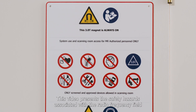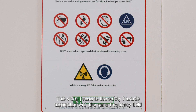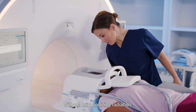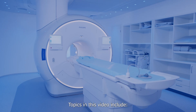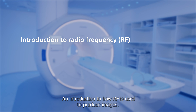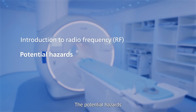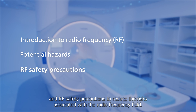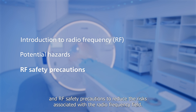This video presents the safety hazards associated with the radio frequency field used to produce high quality images of the body without using ionizing radiation. Topics include an introduction to how RF is used to produce images, the potential hazards, and RF safety precautions to reduce the risks associated with the radio frequency field.